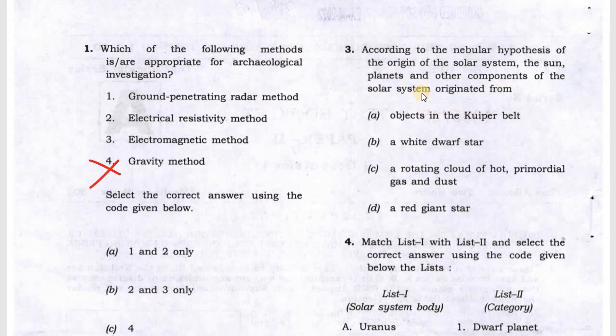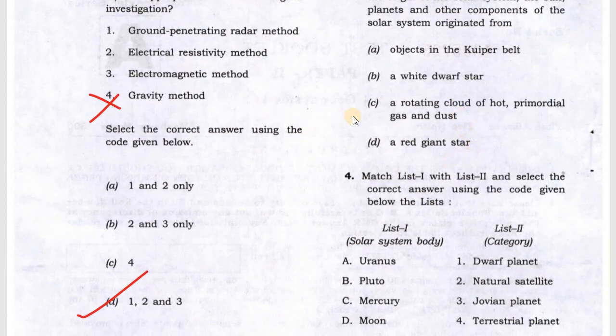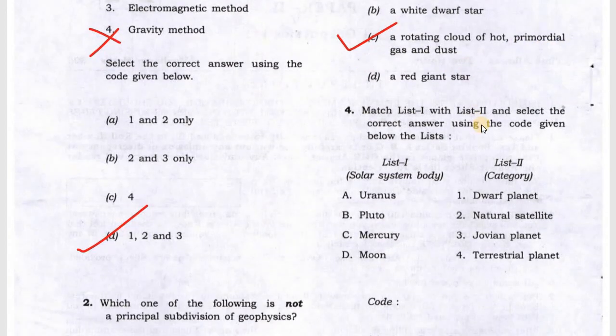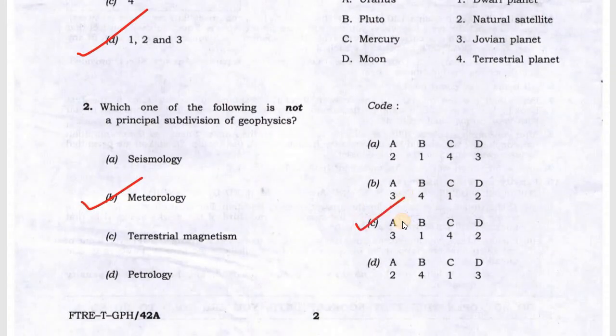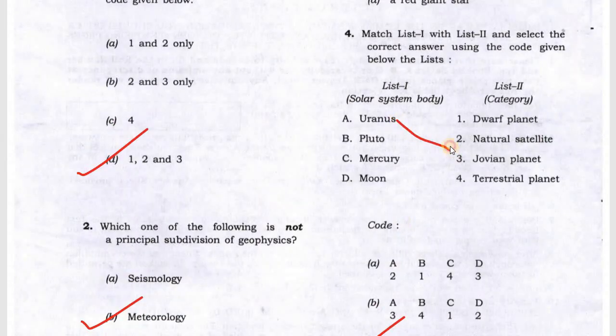Next they are asking about the nebula hypothesis. According to the nebula hypothesis for the origin of the solar system, this is option C: rotating cloud of hot primordial gas and dust. Next question is an easy one. Option C will be correct: Uranus is the Jovian planet and the rest you can match, C will be the answer.